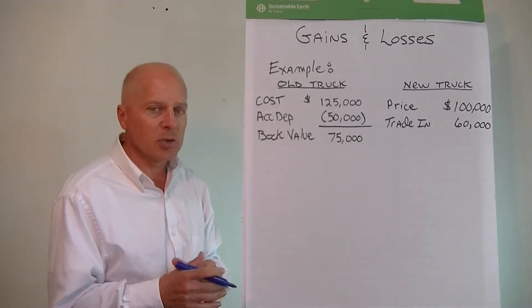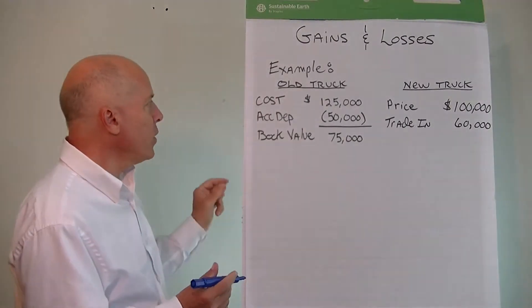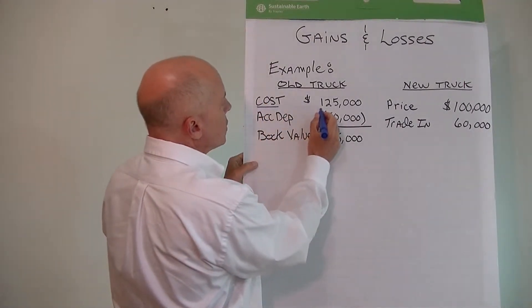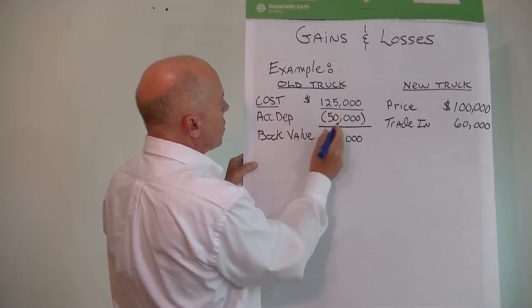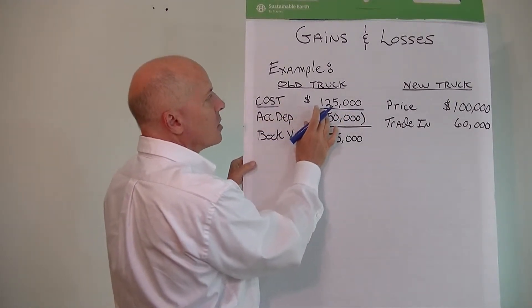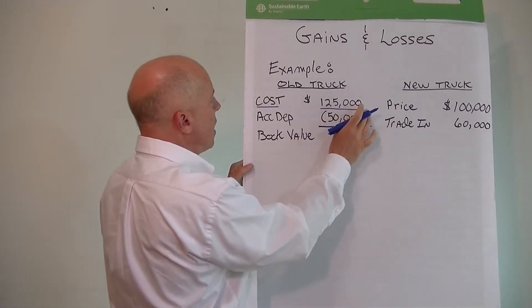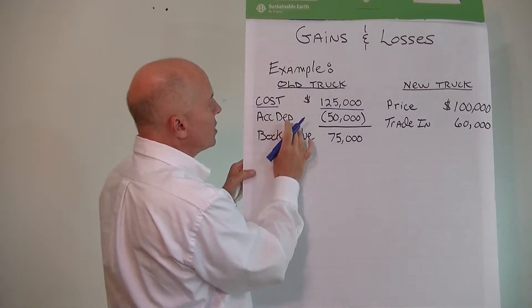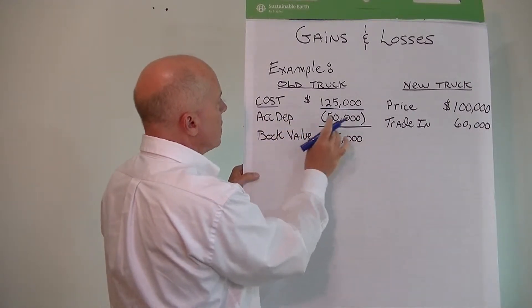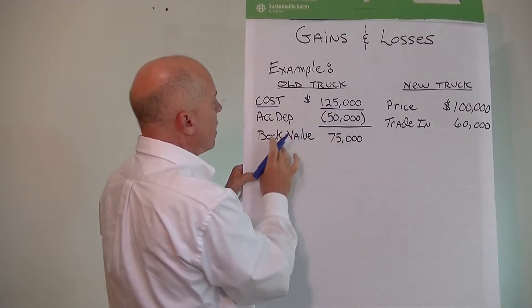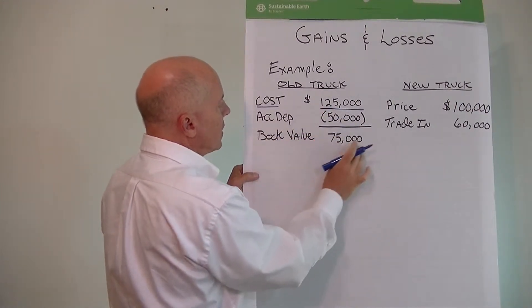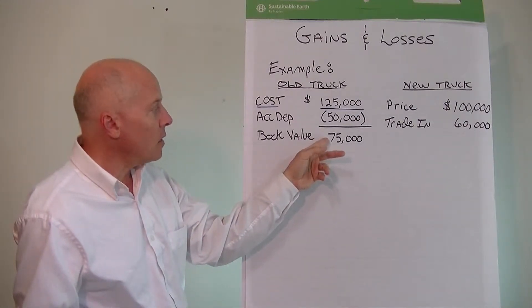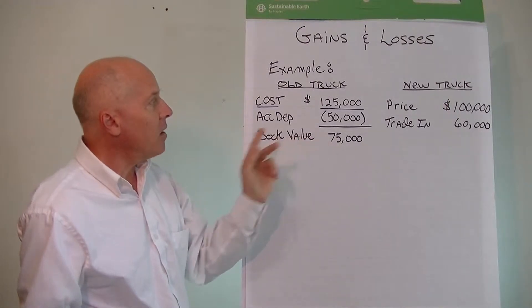Let's just pretend for a minute that we originally acquired this truck at $125,000. So we have an asset account set up that shows $125,000. And we have this asset for five years. The accumulated depreciation is $50,000. $125,000 less $50,000 is book value of $75,000. So the carrying value or book value of this old truck that we're trading in is $75,000.